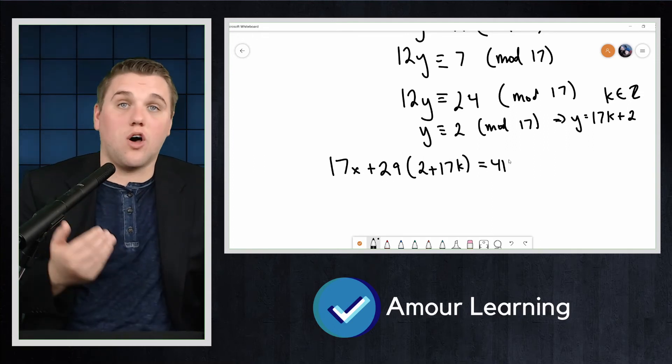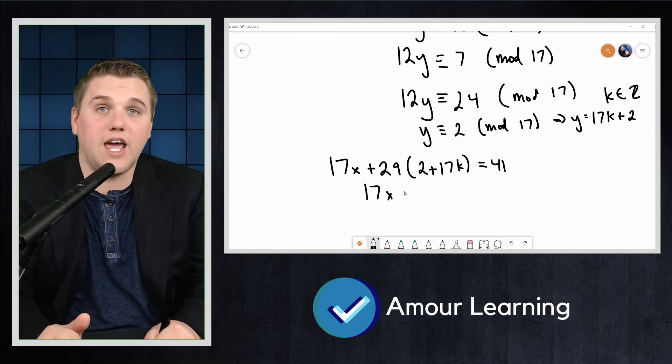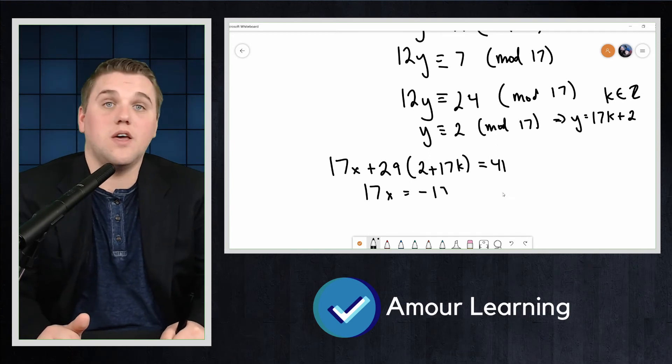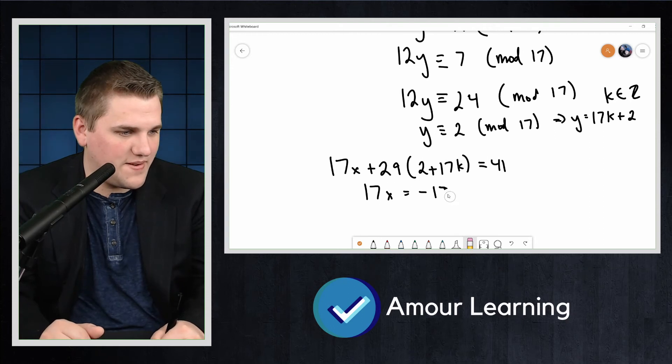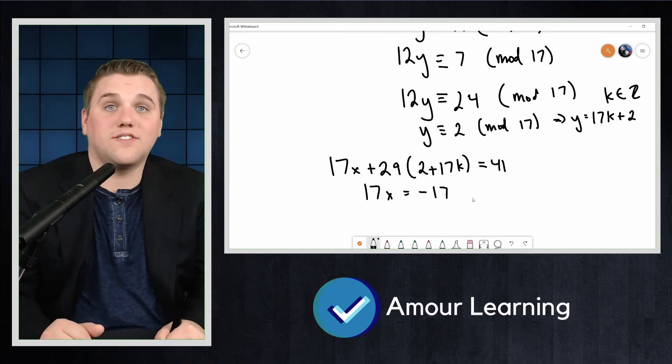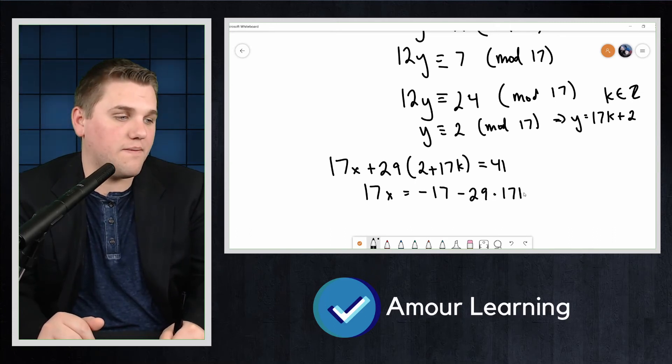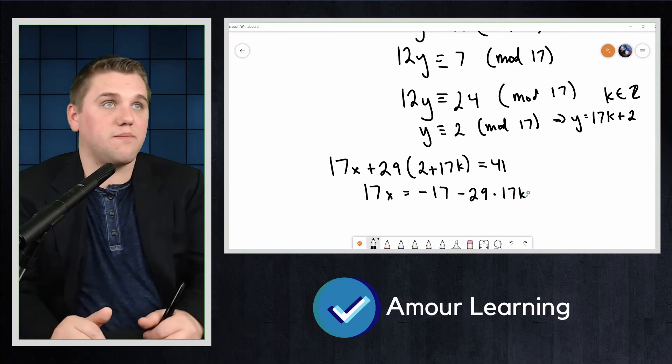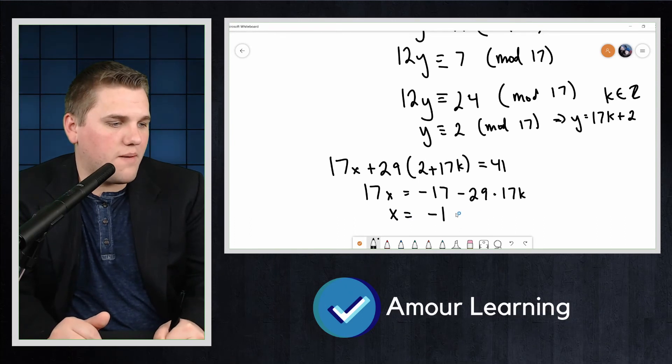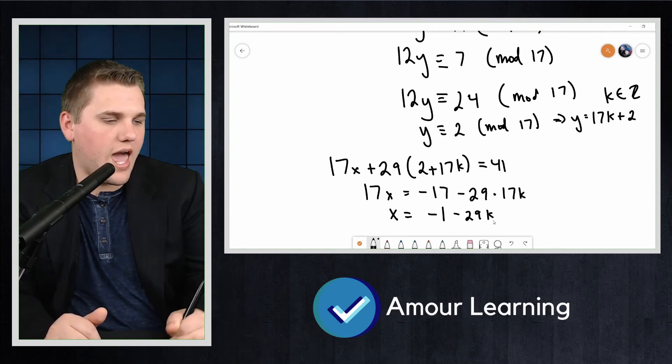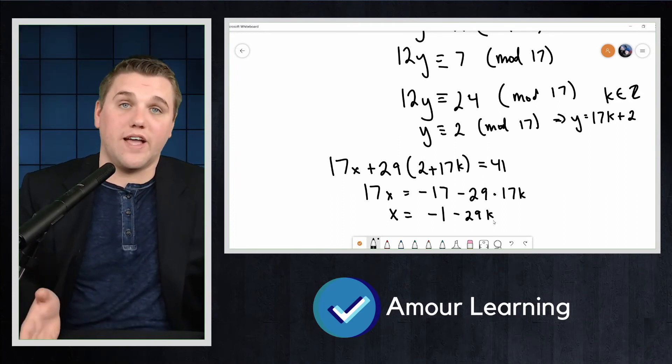Okay, so now we can solve for x here. I'm just going to skip a little bit of algebra. We get 17x = -17 - 29(17k). And then we can divide everything by 17 to get x = -1 - 29k.